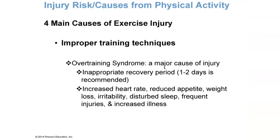There are four main causes of exercise injury. The first one is improper training techniques. We've already talked about overtraining syndrome — it's a major cause of injury. Not having that 48-hour recovery period is key. Some symptoms of overtraining syndrome include increased heart rate, reduced appetite, weight loss, irritability, disturbed sleep, frequent injuries, and increased illness.